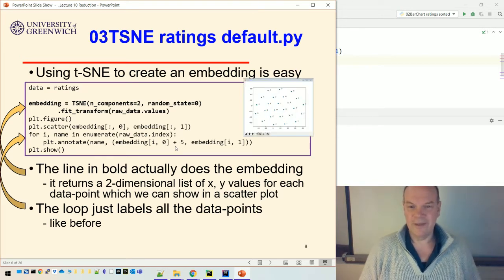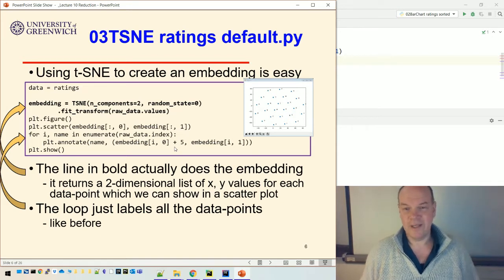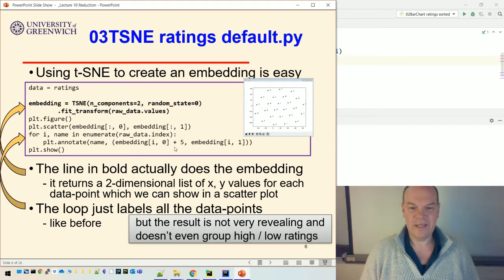Okay, and that's what it looks like. So at the moment, all it's done is just kind of spread them out over the two-dimensional plane. So actually that's not particularly revealing. It doesn't group low and high ratings together. So what we'd like to see is all the clusters grouped together, and that would tell us something about the structure of the data. But it's just spread them out over the two-dimensional plane.